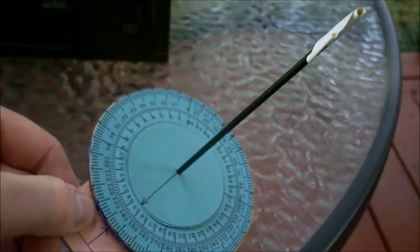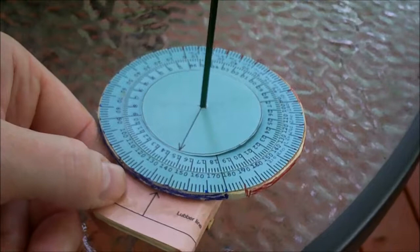This is a working model of the Bagnold Sun Compass. It is far from a precision device but it works pretty well for practice purposes and I've been tooling around with this for a couple of years now and I've got a pretty good feel for how it works.